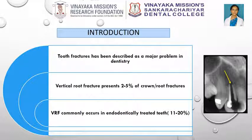Tooth fracture has been described as a major problem in dentistry and is the third most common cause of tooth loss after dental caries and periodontal disease. Vertical root fracture presents 2–5% of crown root fractures.